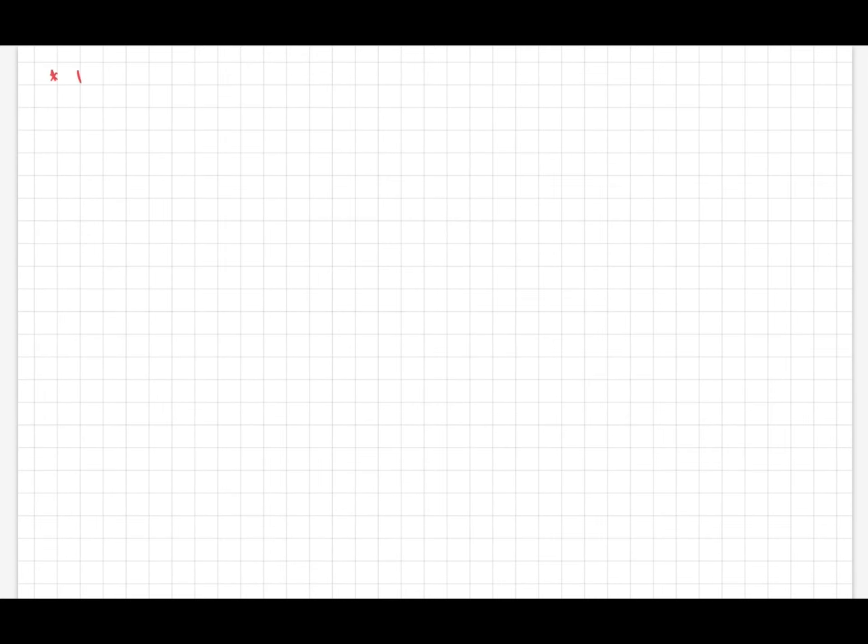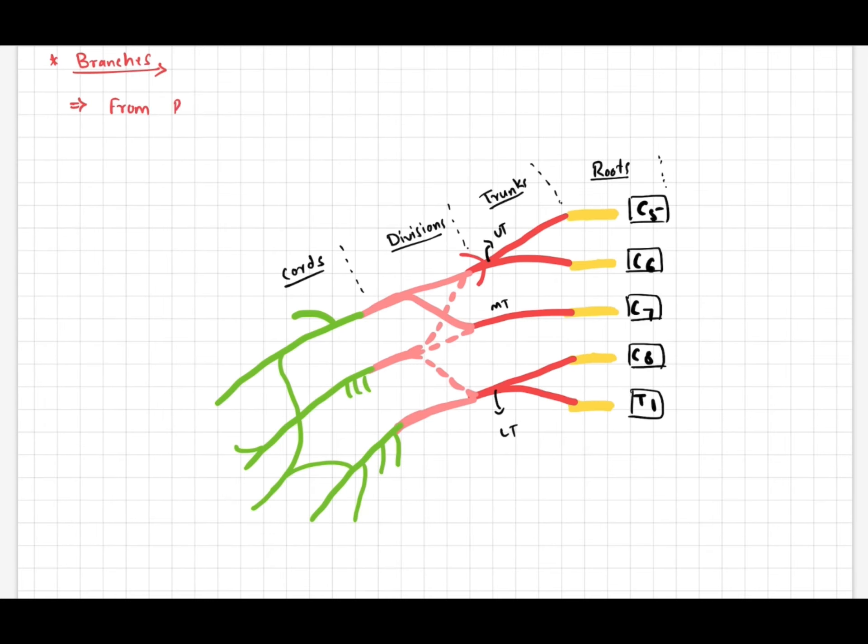Branches of the brachial plexus from roots: There will be two branches - one is the long thoracic nerve to serratus anterior muscle, root value C5, C6, and C7; and dorsal scapular nerve, root value C5.